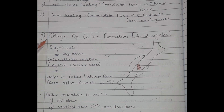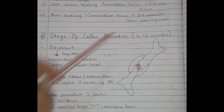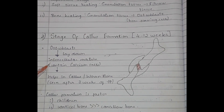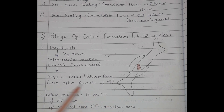The third stage is callus formation, lasting about four to twelve weeks. Osteoblasts lay down an intercellular matrix containing calcium salts, which helps in callus or woven bone formation. This woven bone is seen after three weeks of fracture. Callus formation is faster in children and in cortical bone compared to cancellous bone.